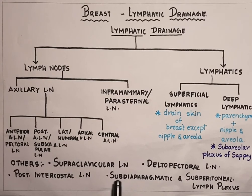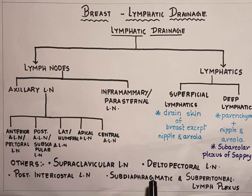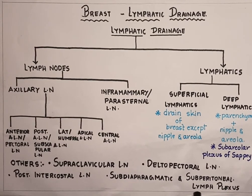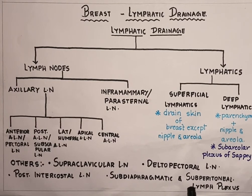The subdiaphragmatic and subperitoneal lymph plexus is a network of lymph vessels situated below the diaphragm.